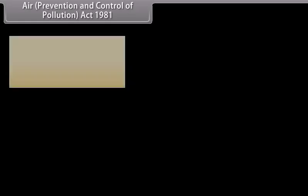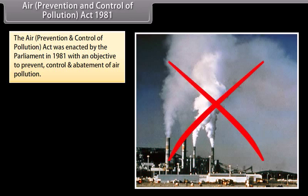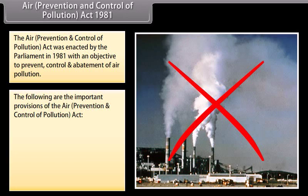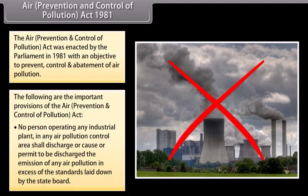The Air Prevention and Control of Pollution Act was enacted by Parliament in 1981 with an objective to prevent, control, and abatement of air pollution. The following are its important provisions: no person operating any industrial plant in any air pollution control area shall discharge, or cause or permit to be discharged, the emission of any air pollutant in excess of the standards laid down by the State Board.